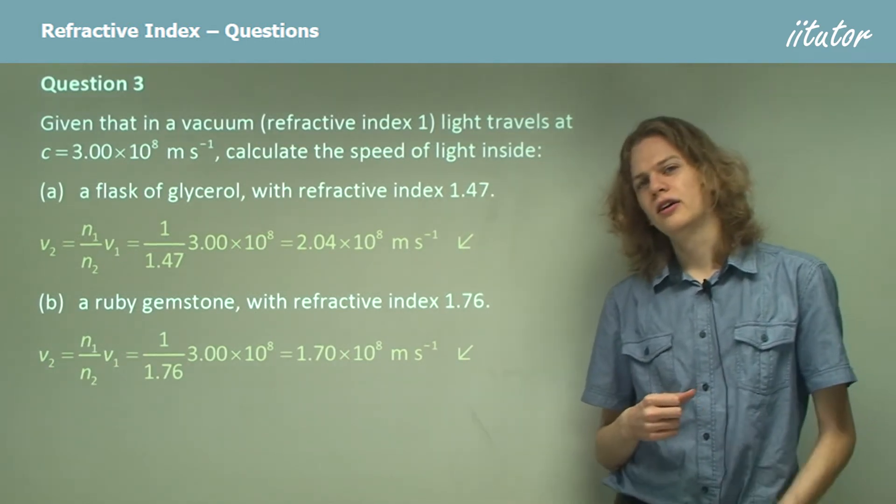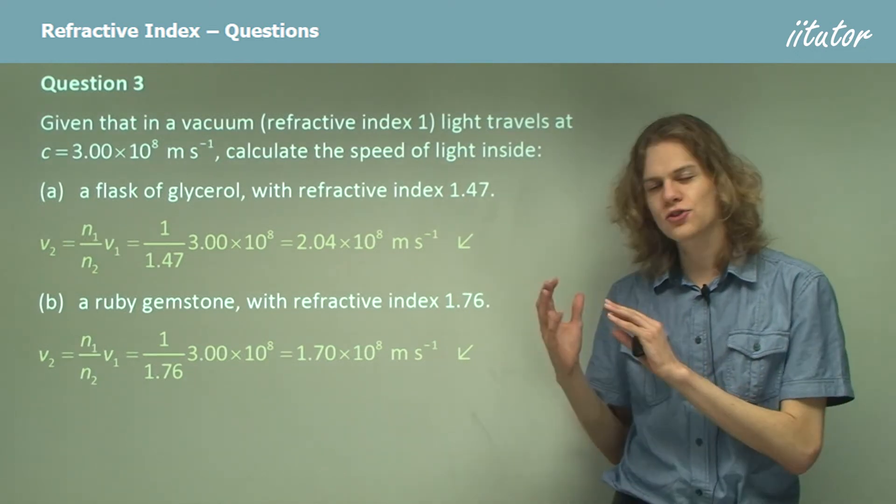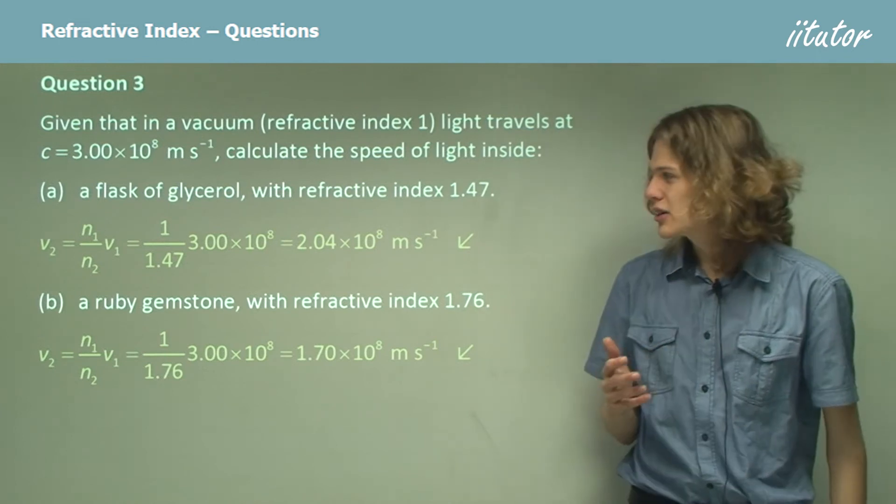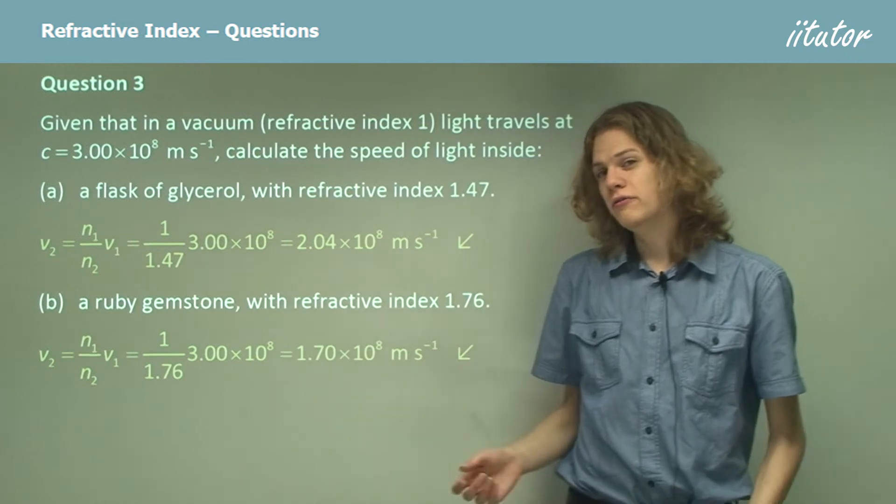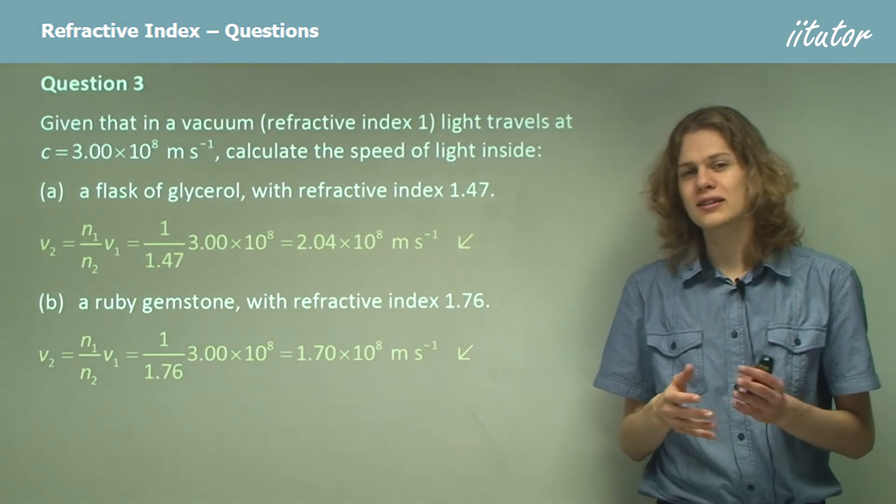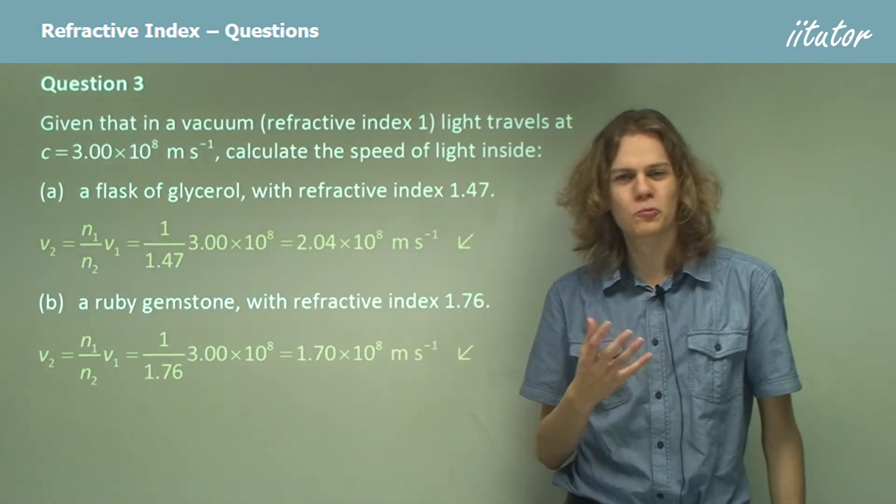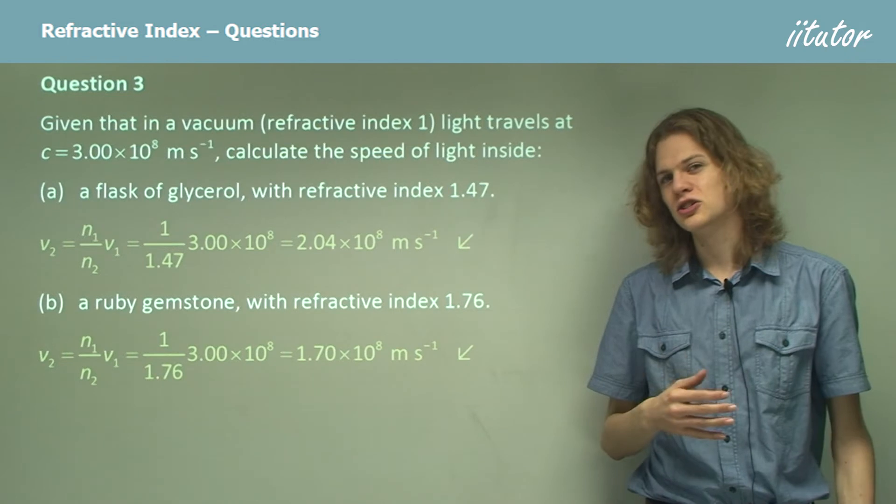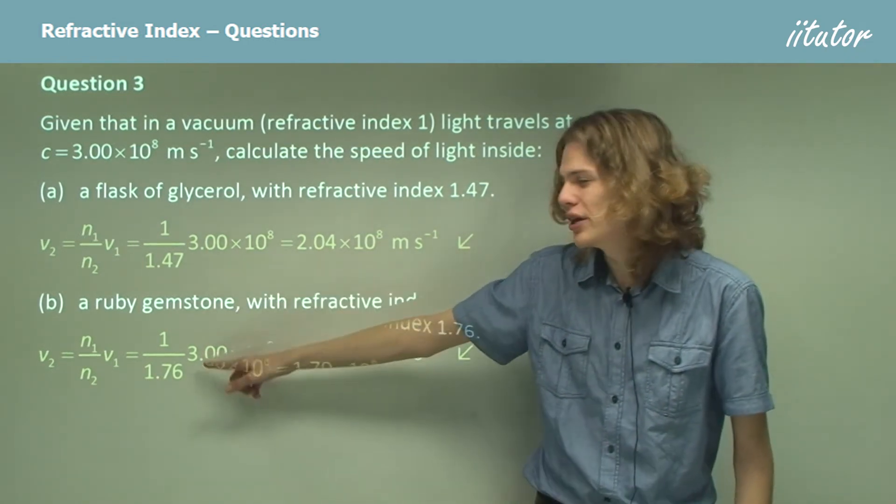Now, suppose we had a beam of light that was traveling from air into these materials instead of from vacuum into these materials. In this case, we would still be using this equation, but V1 would be very, very slightly less than the speed of light, so slightly less that it wouldn't really be noticeable, and N1 would be just higher than 1, but once again in such a small degree that it's not really noticeable. Our final equation will still look like this.